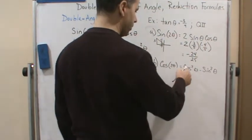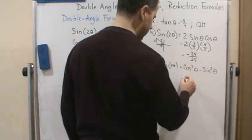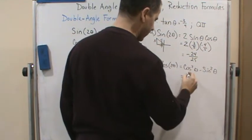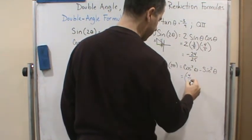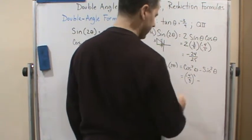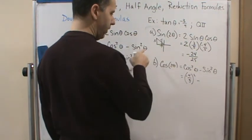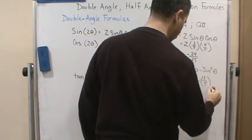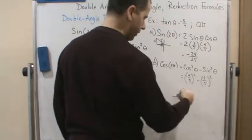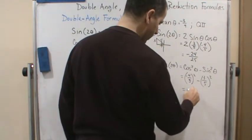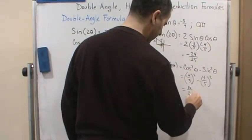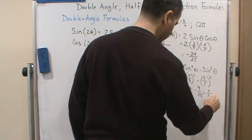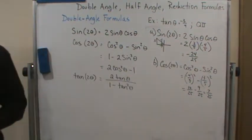So that means I can use cosine and sine and just square them. So I know that cosine of theta is adjacent over hypotenuse, so that's going to be negative four-fifths quantity squared minus sine of theta, which is opposite over hypotenuse, which is three-fifths quantity squared. And then I'm just going to work it out. So this is going to give me 16 twenty-fifths minus 9 twenty-fifths, which gives me 7 twenty-fifths as my answer.